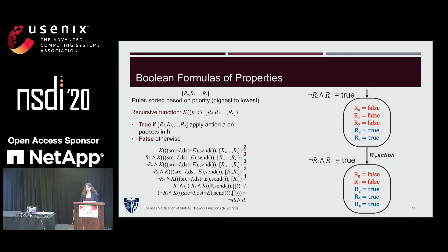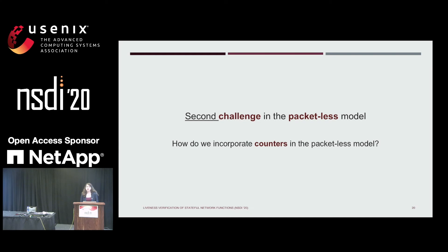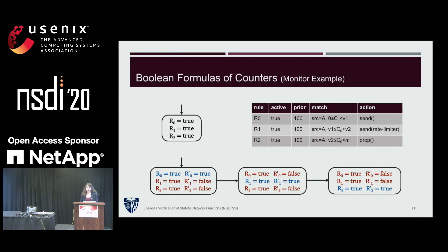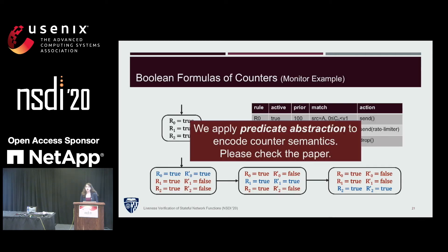This means that the property for this IDS function holds in states where this Boolean formula is true, which you can see in the partial transition system of this function. The second challenge is how to incorporate traffic statistics such as counter semantics in the packetless model that uses only Boolean variables for rules. At a high level, we apply predicate abstraction to encode counter semantics using only Boolean variables, enabling verification of stateful network functions such as a campus monitor. Please check the paper for full details.